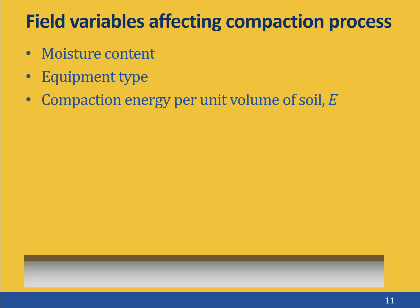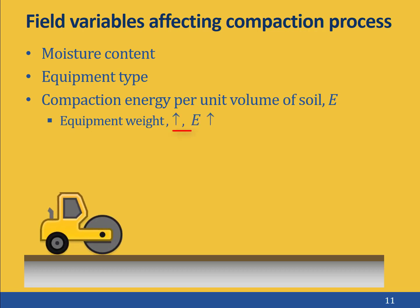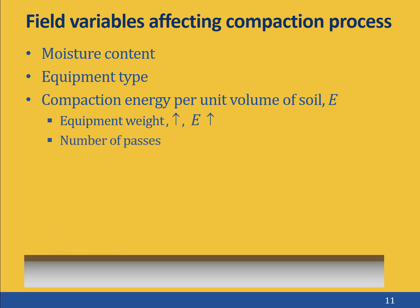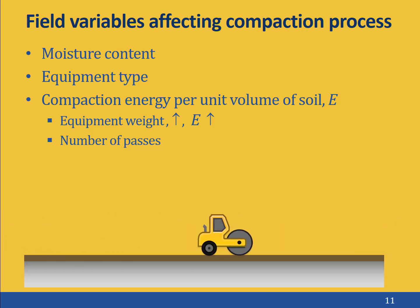The concept of compaction energy per unit volume helps explain the remaining key field variables. The first is weight: increasing the weight of the compactor will increase the compaction energy imparted to the soil and will increase compaction. A second variable is the number of passes. For a given piece of equipment, increasing the number of passes over a lift will increase the compaction energy imparted to the soil.